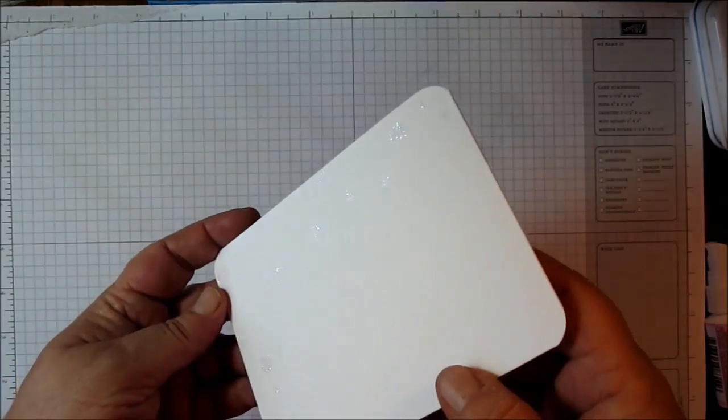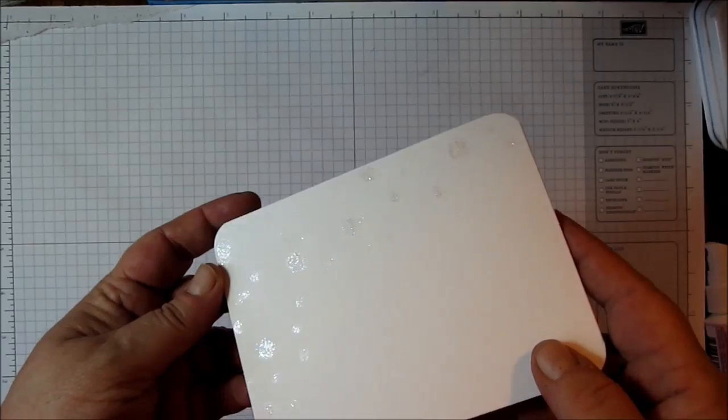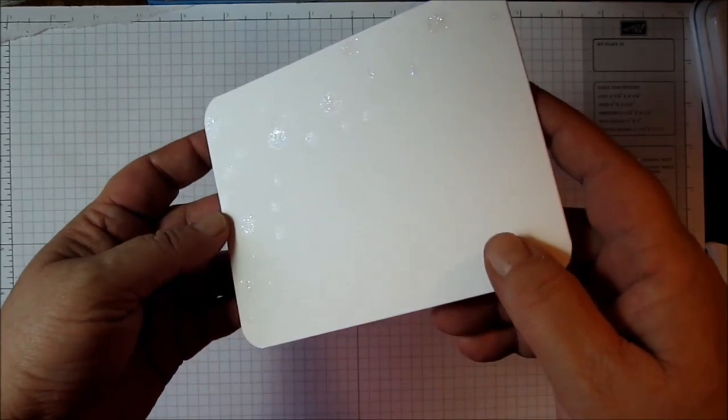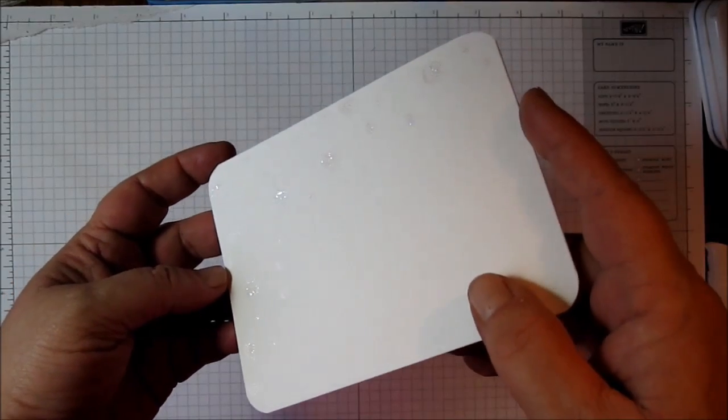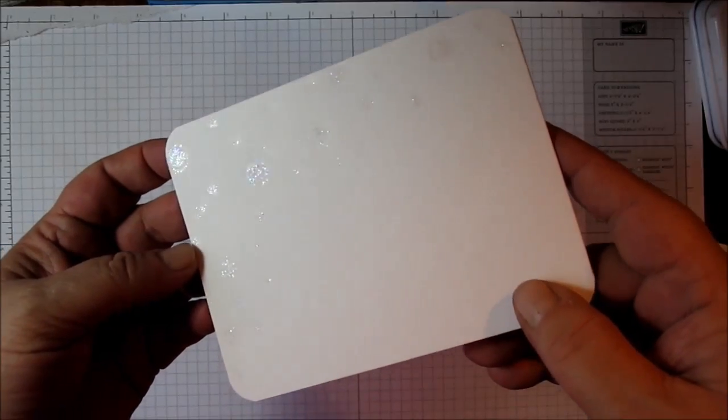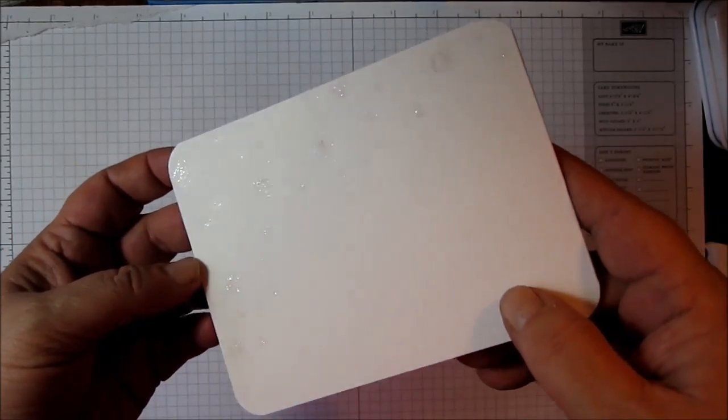I've pre-done this card by adding the Smooch Glitz. This is the frost color of Smooch Glitz, and if you can see, let me get it in the light just right, it's got a nice little shimmer to it.